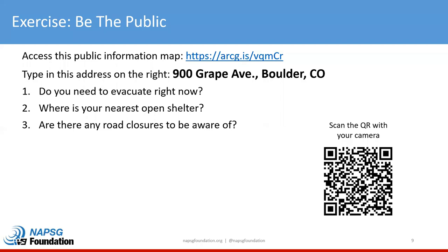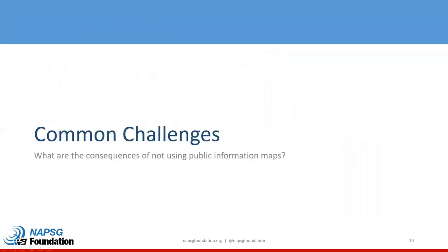There are a lot of things going on in this map, but one of the things we tried to do is make it as easy as possible for the affected public to answer three really critical questions. We'll come back to this. There's always room for improvement, but I think you'd agree that's one approach that might work for the public.